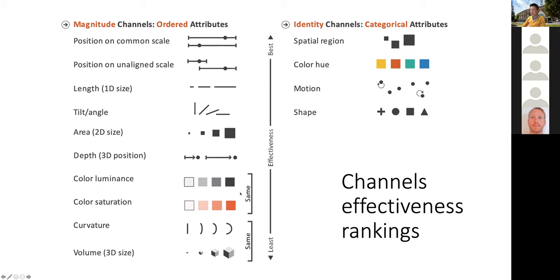Color luminance and color saturation have more or less the same effectiveness, and similarly for curvature and 3D volume. For the categorical channels, the most important thing to remember is: when designing, depending on the type of your attributes — whether ordered, quantitative, or categorical — you try to pick the most effective channel available.